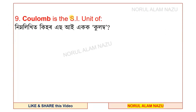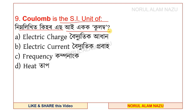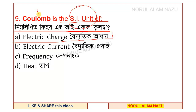Question number 9: Coulomb is the SI unit of what? The options are electric charge, electric current, frequency, and heat. Option a — electric charge — is the answer. The SI unit of electric charge is the coulomb.